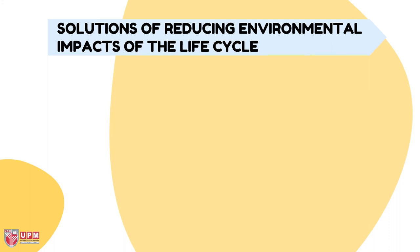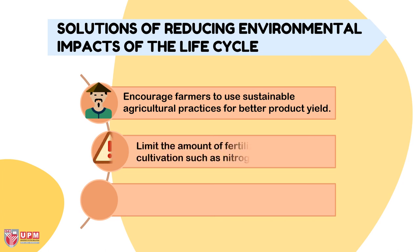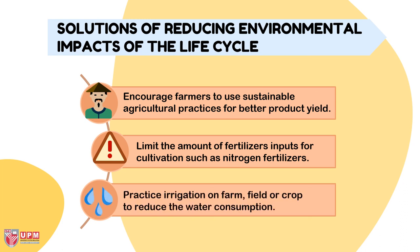There are several solutions for reducing environmental impacts of the life cycle. The first is to encourage farmers to use sustainable agricultural practices for better product yield. The second is to limit the amount of fertilizer inputs for cultivation, such as nitrogen fertilizers. The third is to practice irrigation on farm fields or crops to reduce water consumption.